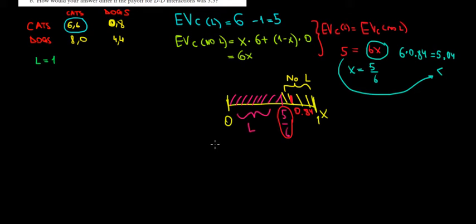So the expected value of cats here is going to be equal to 6. And since cats interact with cats, dogs have no one to interact except for dogs. So the expected value for dogs is going to be equal to 4 because dogs with dogs are going to have 4 in payoffs.